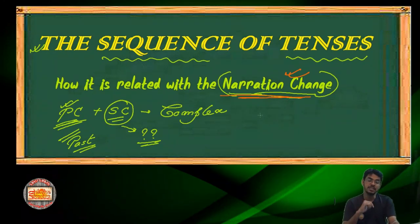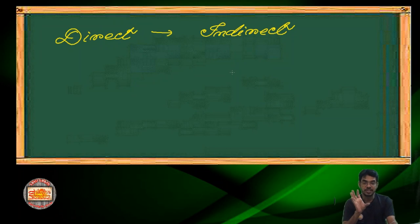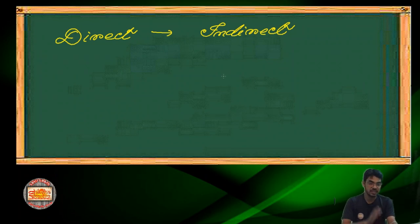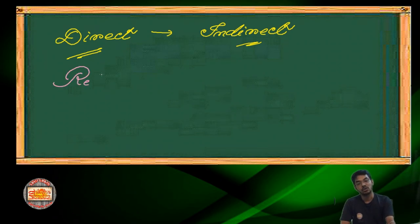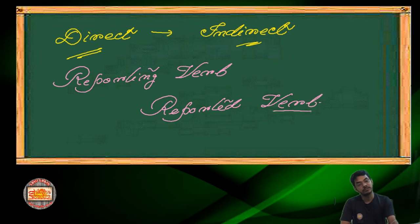Before we proceed to the rules and the sequence, let me show you something here that would be of much help. When we interchange direct speech into indirect, there are some terms that we use. It's very essential to learn the sequence of tenses and then address the direct-indirect speech or the narration change. Be it direct or indirect, there are some terms associated to them — that is a reporting verb and reported verb. For these two verbs, we have to make an adjustment of the tense.